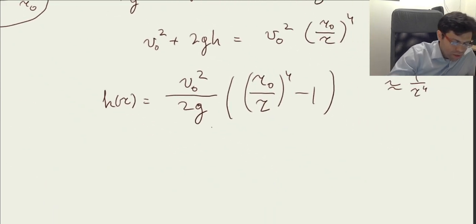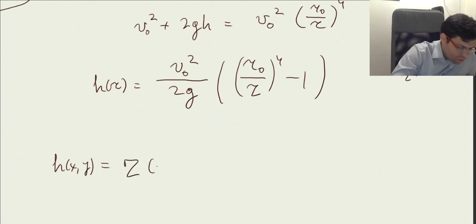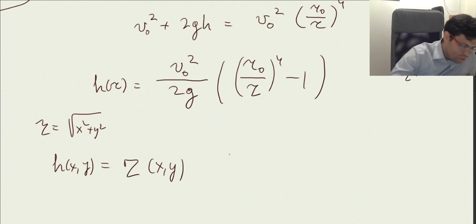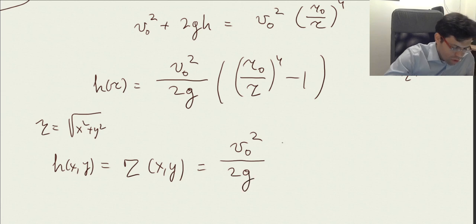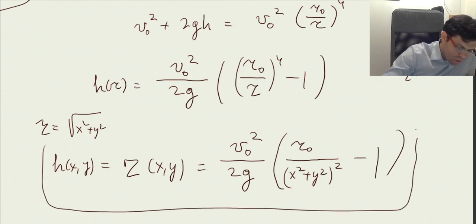If we now plug in and we want to write this equation of h, x, y, and maybe this is our z, if you want to write it as z as a function of x and y, then r is the square root of x squared plus y squared. Then we plug it in here, so we get the equation v0 squared divided by 2g, and here it is all times r0 divided by x squared plus y squared, this is r squared, and we need r to the fourth power, so it is squared minus 1. This is our equation that you saw in the thumbnail.